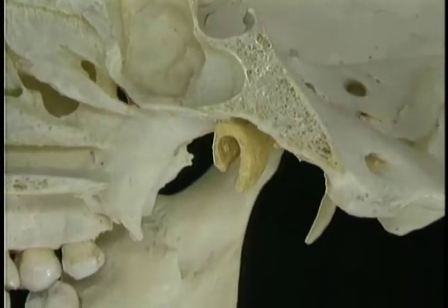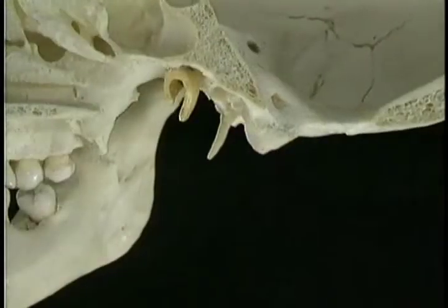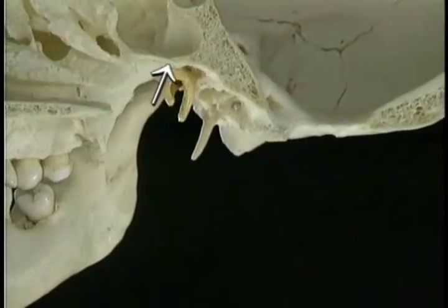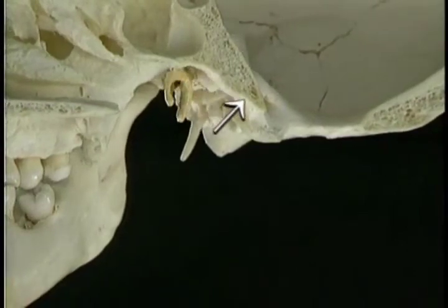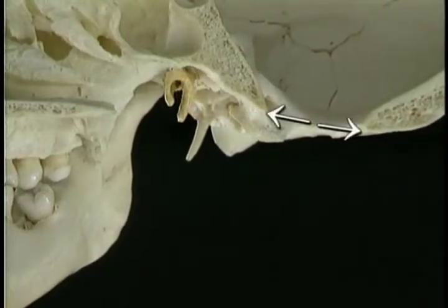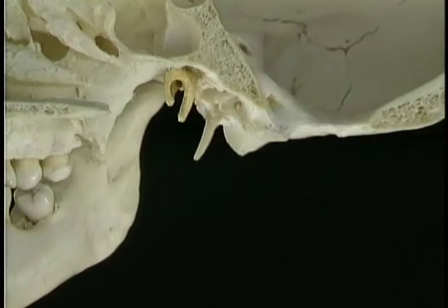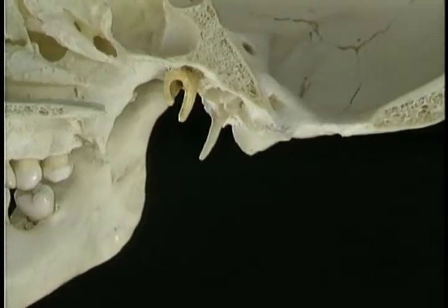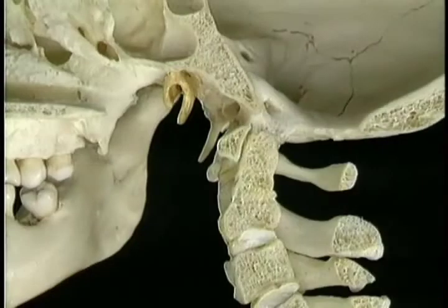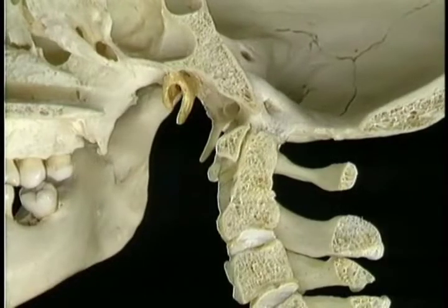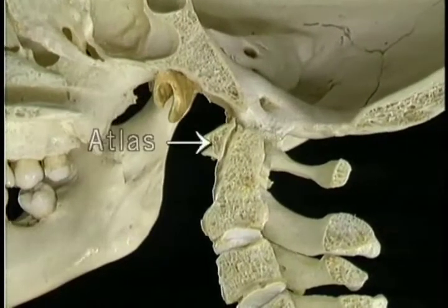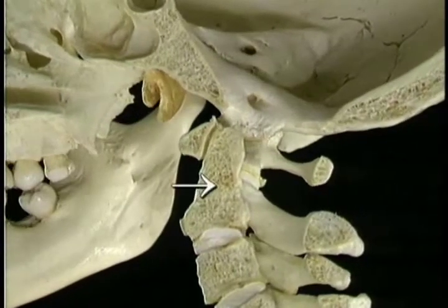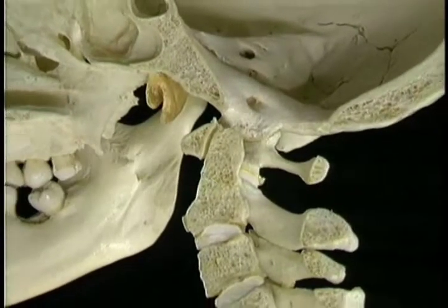The roof of the nasopharynx, formed by the underside of the sphenoid and the basal part of the occipital bone, slopes downward toward the foramen magnum. To complete our picture of the bones around the nasopharynx, we'll add the cervical vertebrae: the anterior arch of the atlas and the odontoid process of the axis.